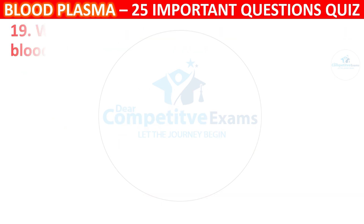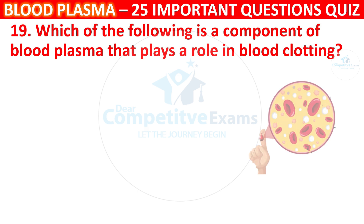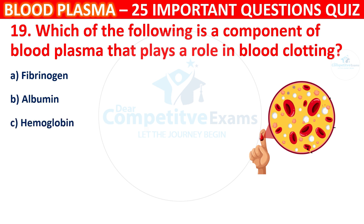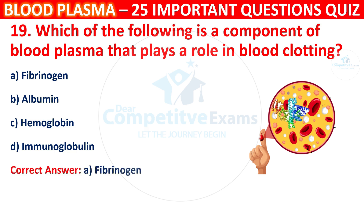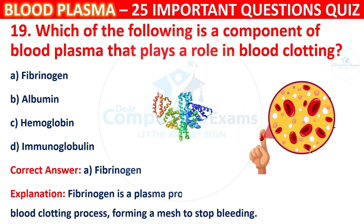Question 19: Which of the following is the component of blood plasma that plays a role in blood clotting? Your options are Fibrinogen, Albumin, Hemoglobin, or Immunoglobulin. The correct answer is A, i.e. Fibrinogen. Fibrinogen is a plasma protein that converts to fibrin during the blood clotting process, forming a mesh to stop bleeding.